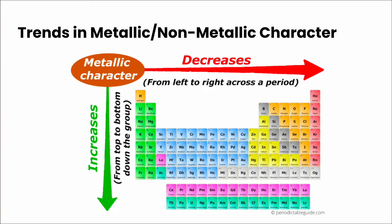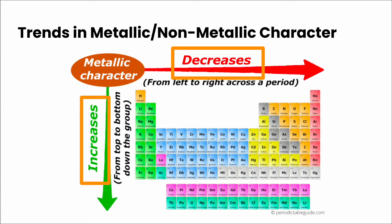Finally, we've got trends in metallic and non-metallic character. Elements can be classified as either metals, non-metals, or metalloids. In terms of the trend itself, metallic character is going to decrease across a period and increase down a group. Metals have low ionization energy values and tend to lose electrons during a chemical reaction, so this trend fits with those ionization energies. Non-metals have highly negative electron affinity values and tend to gain electrons during a chemical reaction, which fits with those non-metals.